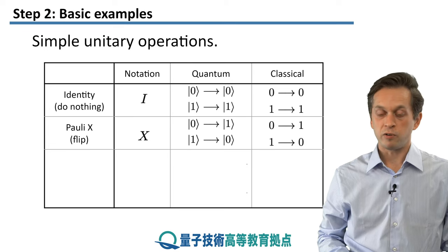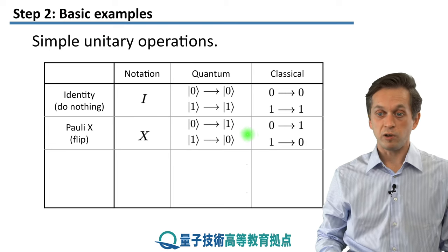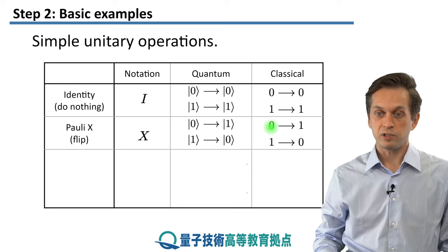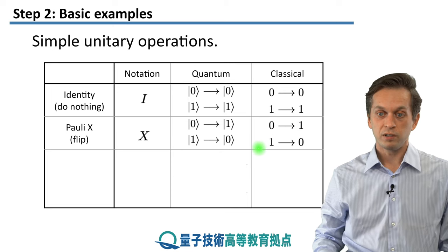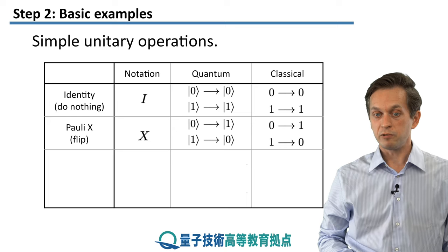Classically, you have a corresponding representation as well. It's the NOT gate, where it takes input 0 into classical bit 1 and bit 1 into classical bit 0.